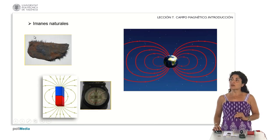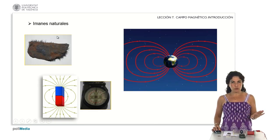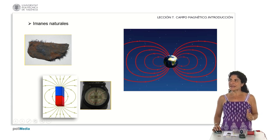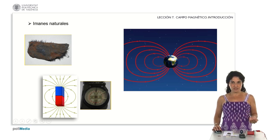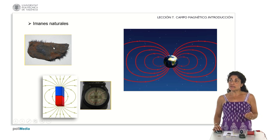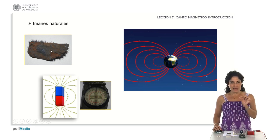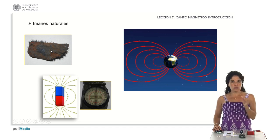The origin of magnetic phenomena was already known since ancient Greece, since the Greeks knew of a natural magnet called magnetite, which is an iron oxide. This stone, this mineral, had the property of being able to attract small pieces of iron, small pieces of metal — iron or steel.